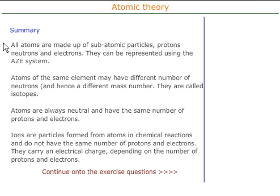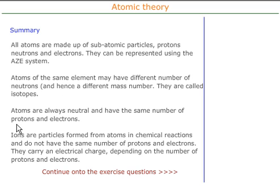In summary, all atoms are made up of subatomic particles. They are neutral, so the protons and electrons are equal. They can be represented by the AZE system. Atoms of the same element may have different numbers of neutrons, and hence a different mass number — these are called isotopes. Atoms are always neutral and have the same number of protons and electrons. Ions, however, are particles formed from atoms, and they do not have the same number of protons and electrons. They carry an electrical charge depending on the number of protons and electrons.